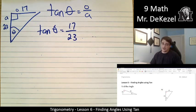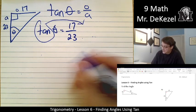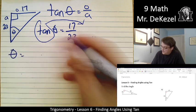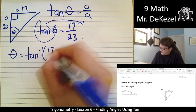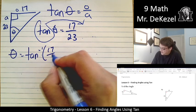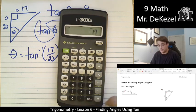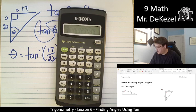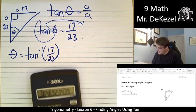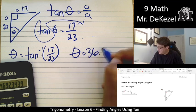To get theta all by itself, we're going to do the opposite on the other side for this. So, tan is going to move over, it's going to be the opposite. So, then theta is equal to the tan inverse of 17 divided by 23. So, we'll go ahead and do that. 17 divided by 23 equals second function tan inverse, we get 36.5. So, theta is equal to 36.5.